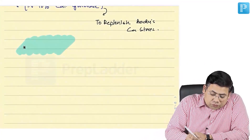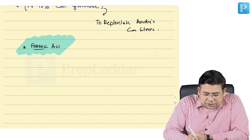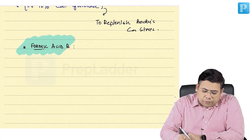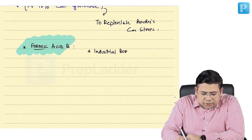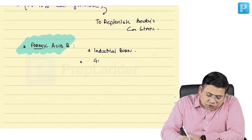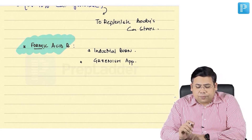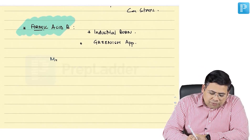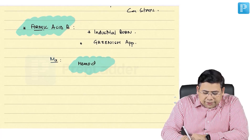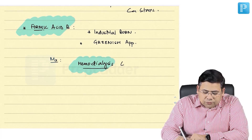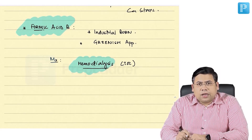Another special chemical burn is formic acid burn. This is also an industrial burn. It gives a greenish appearance to the wound. The treatment of choice for formic acid burn patients is hemodialysis.